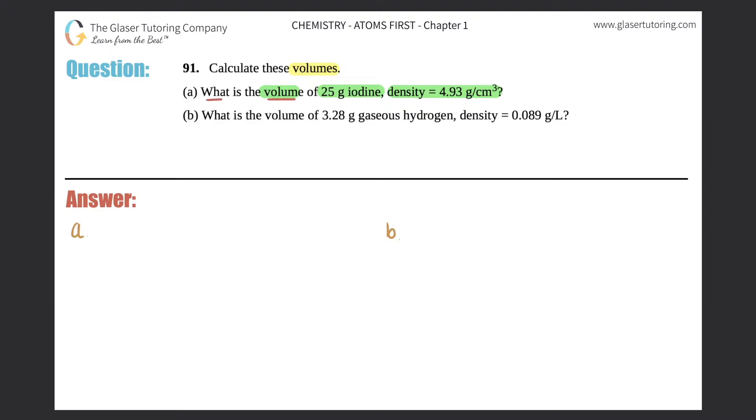So the question is what is the volume, so we don't know what the volume is. Volume is a question mark. They gave us a unit in g which is grams. Just know that grams is always a mass, no exceptions, 100% mass will be in grams or any denomination of that whether it's kilograms, the SI units. So we have a mass of 25 grams.